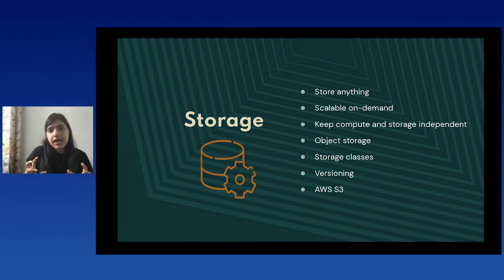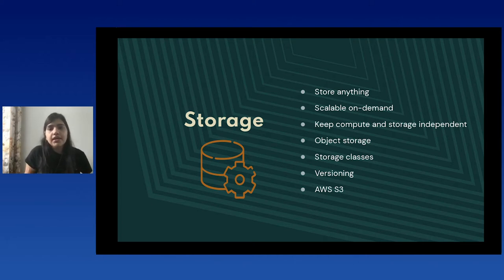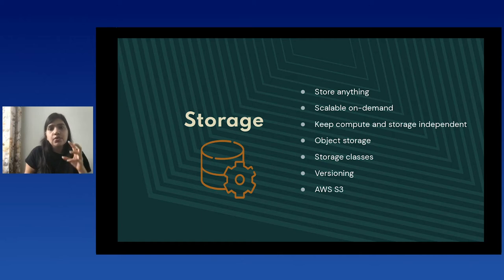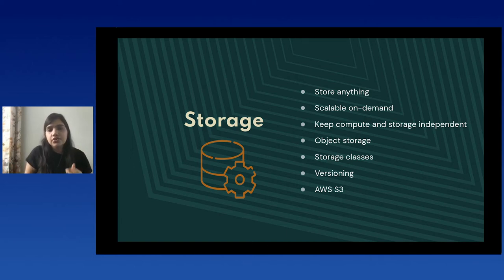First is storage. The storage platform you use for your data lake should allow you to store anything, and as business use cases evolve, the data will grow, so it should be scalable on demand. A really interesting point is to keep compute and storage independent of each other. With Apache Hadoop, compute and storage are tightly coupled — if you want to increase storage, you also have to increase compute, and there is a lot of maintenance involved. When designing your data lake, make sure storage and compute are independent so they can scale individually.